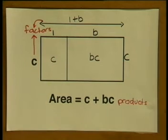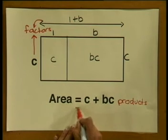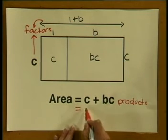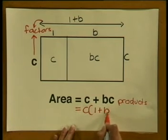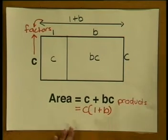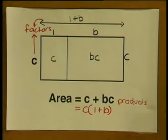We can therefore say that the area represents the sum of the products, and the factors are C and 1 plus B. We can also write the product C plus BC as the product of C multiplied by 1 plus B. Notice that C is the common factor of C and BC. I have taken out the common factor C — in other words, I have factorized the expression.